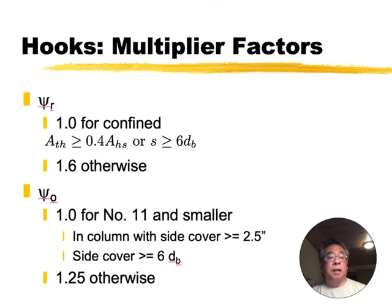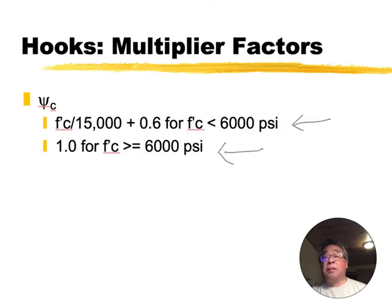And we'll come back to that R factor. I want to go through the other ones. And then there's a concrete factor. If you are greater than or equal to 6,000 psi, the factor is 1. And if you're less than that, there's an equation there to calculate the factor.